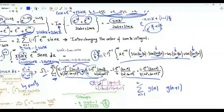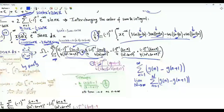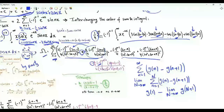We have the sum from n=1 to infinity of g(n) − g(n+1), which is a telescoping sum equal to g(1) minus the limit as N→∞ of g(N+1). If we replace n by 1, we get 3/4. If we replace n by N+1 and take the limit as N→∞, we get 0, since we have a quartic polynomial in the denominator and degree-1 polynomial in the numerator.